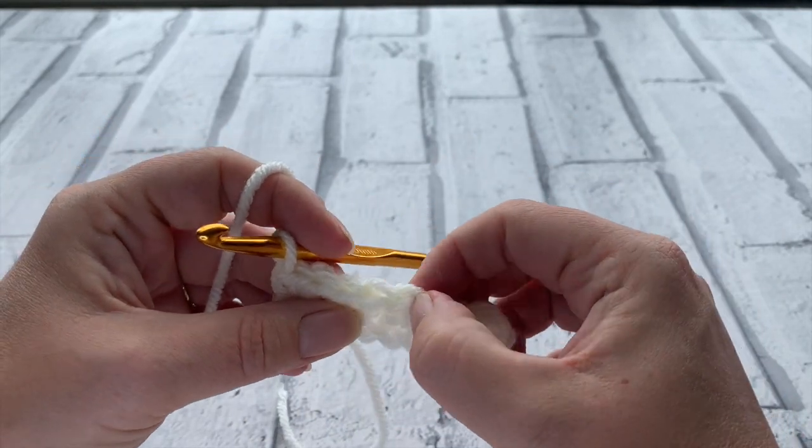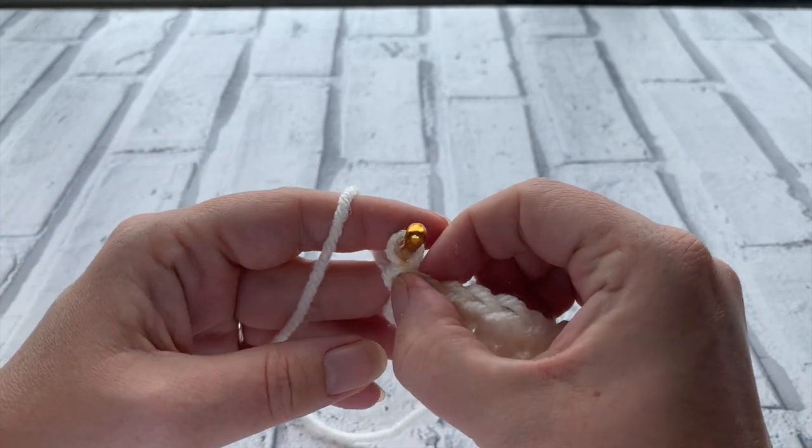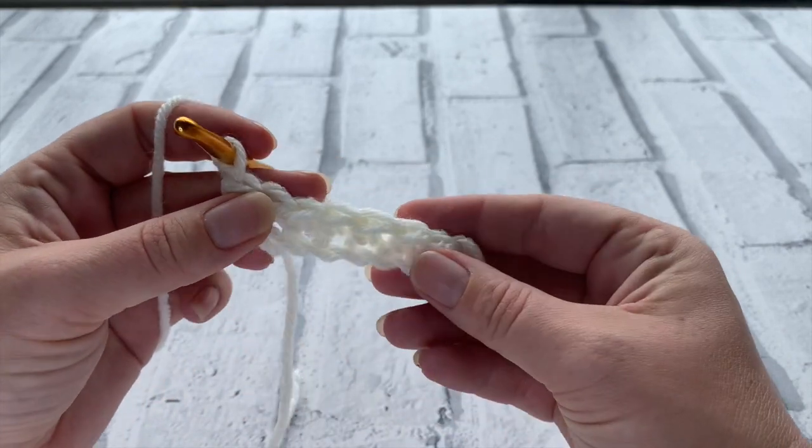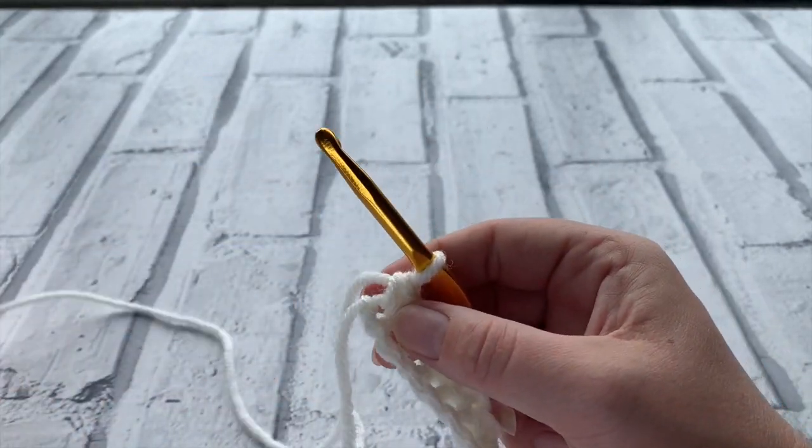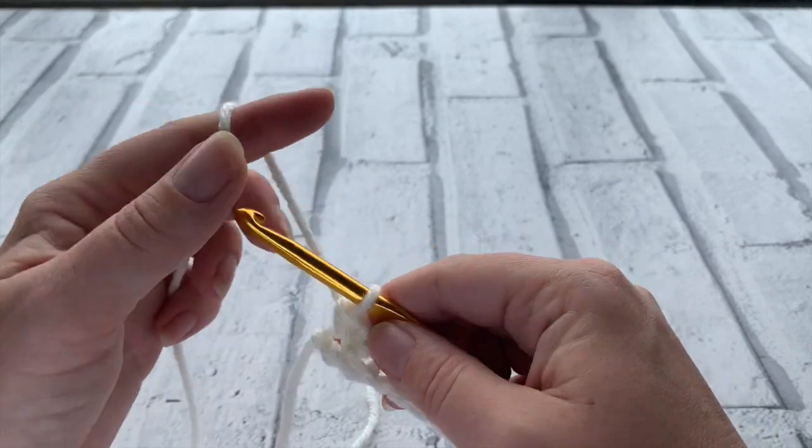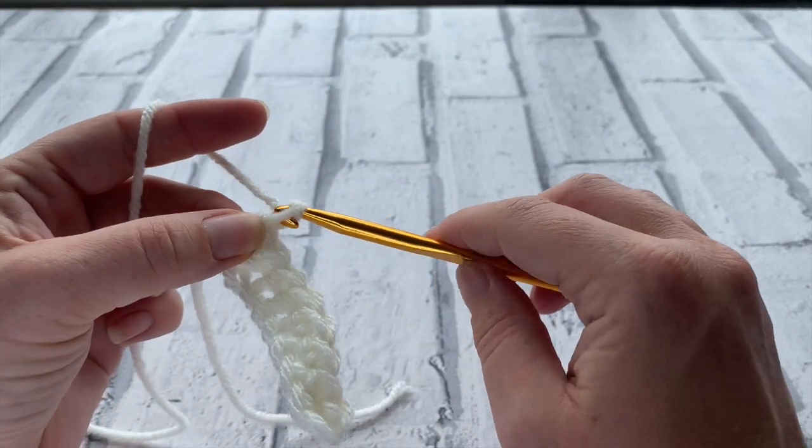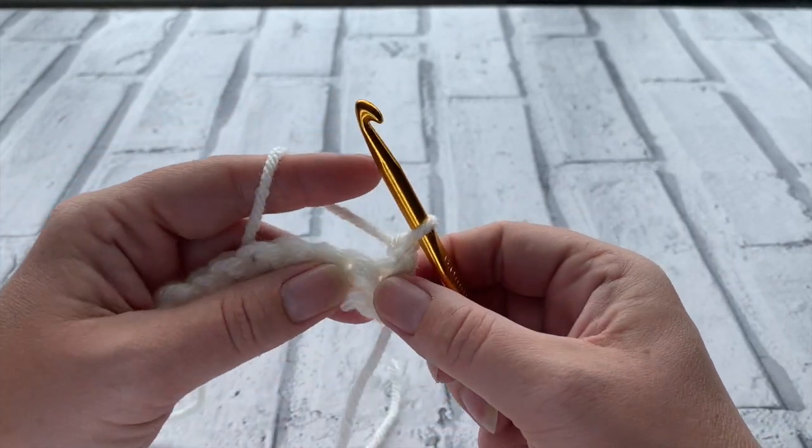And you should have at the end of this a stitch count of eight double crochets. Because remembering that this one does not count on our hook. So to turn our work the turning chain is going to be one. So we simply chain one and then turn our work.